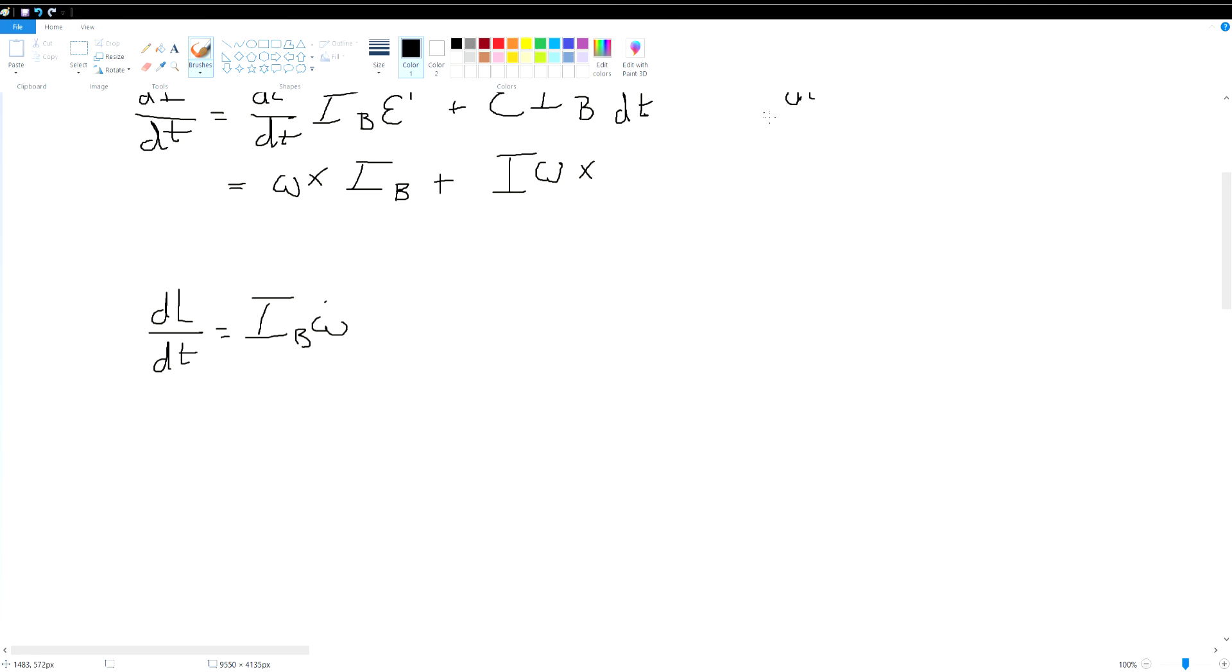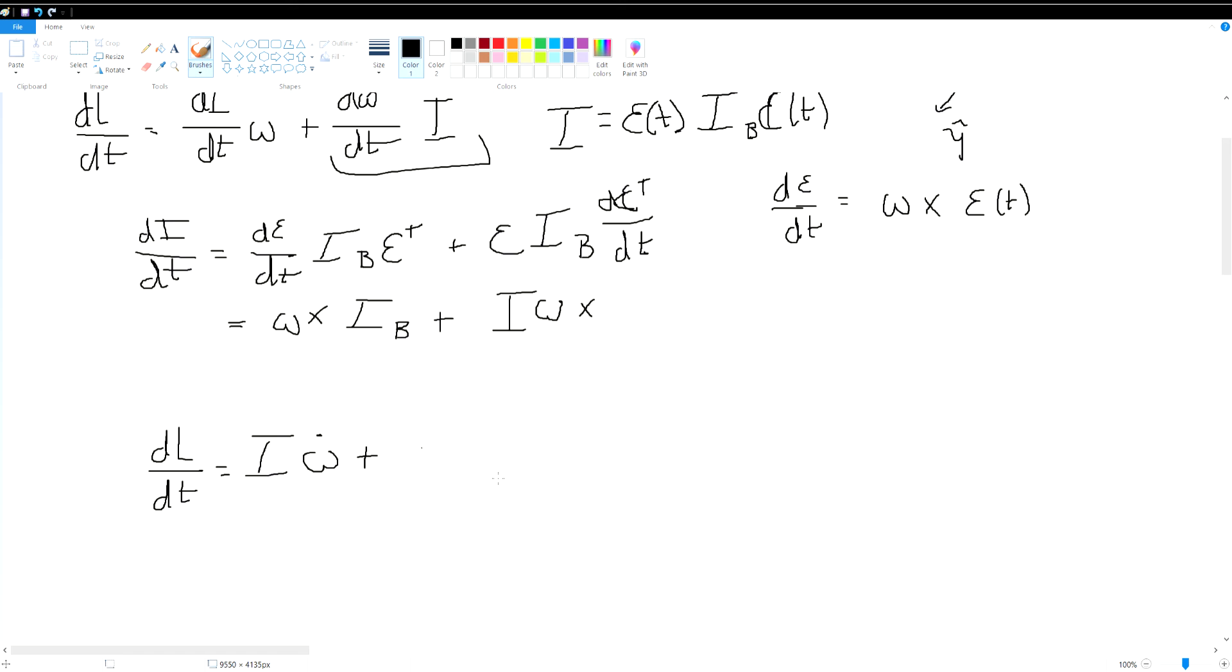So now we can go back to the original equation that we pulled up here. So we can say dL/dt is equal to I omega there. Omega all the way out there. So that should not actually be body.